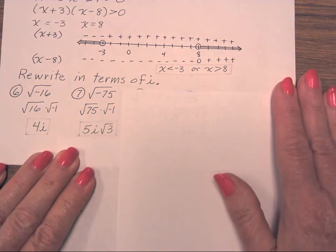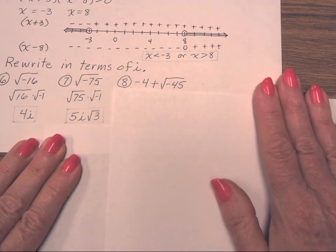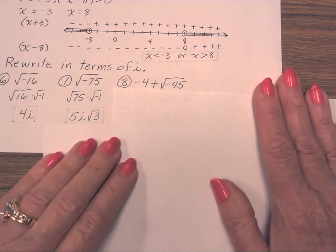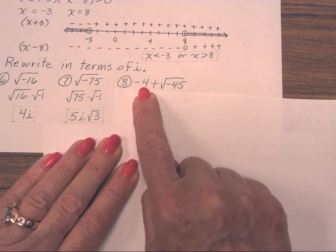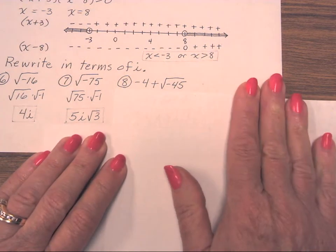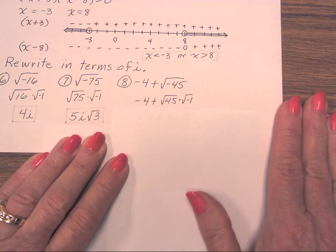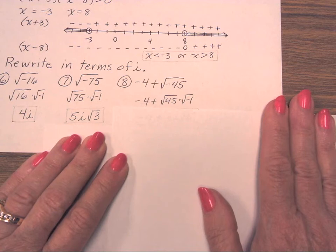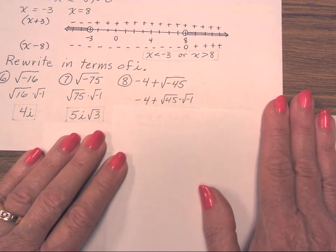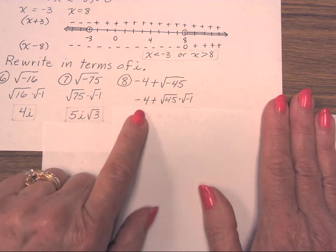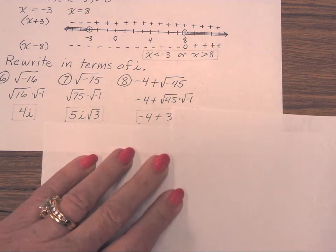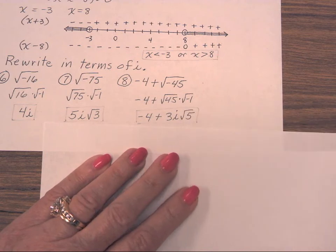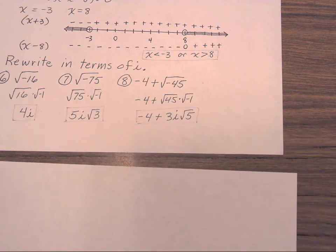The last one of these, number 8: negative 4 plus the square root of negative 45. The negative 4 is the real part of our answer; we just need to simplify the square root of negative 45. You're going to factor out 45 — it's 5 times 9, and 9 is 3 times 3. So negative 4 plus: 3 comes out of the radical, the square root of negative 1 comes out as i, and the factor of 5 that was in there just one time remains in the radical. The answer is negative 4 plus 3i square root of 5.